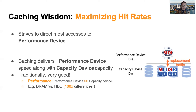By maximizing hit rate, caching is able to deliver performance device-like speed with very large capacity. In traditional hierarchies, the performance device is much, much faster than the capacity device, and caching hence works really well.